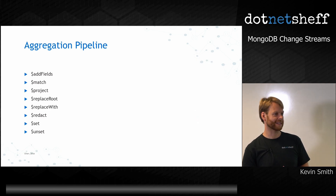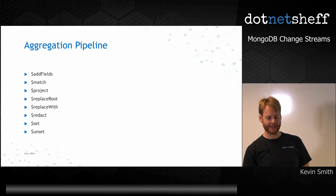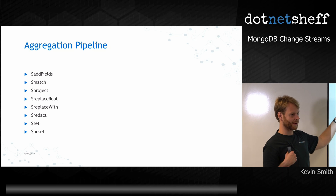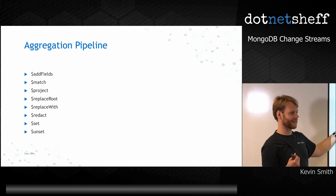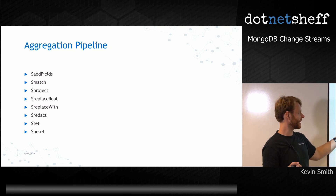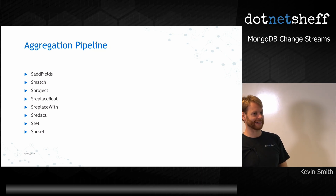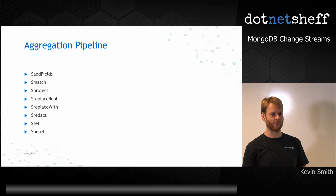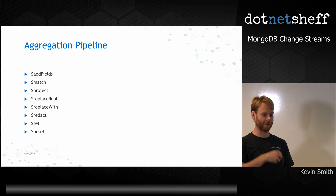You can also use the aggregation pipeline with change streams. If you've used Mongo before, there's a powerful query language called the aggregation pipeline. These are the stages allowed within change streams: you can add fields to the document that comes back, match different properties (like only update statements), project things out, replace the root to change the whole document structure, redact certain information, and set or unset certain properties. So if you've got a massive document like a legal case and only want the customer's name, you can project just that back out.